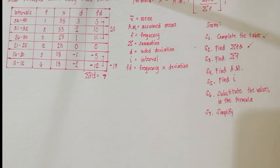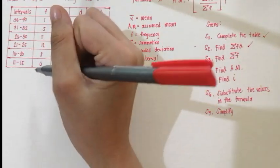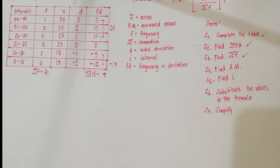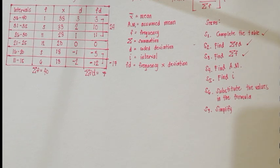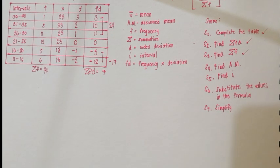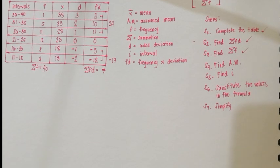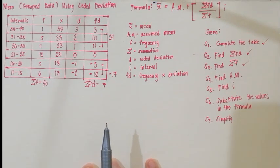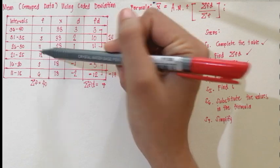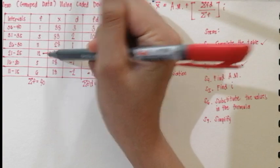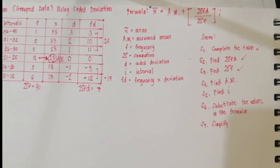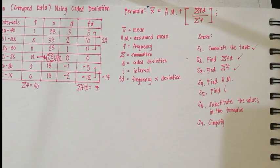Step 3: we need to find summation of F — just add all the frequencies. We already answered this earlier, so the answer is 40. Step 4: find the assumed mean. To find the AM, look at the column of frequencies and find the highest frequency, which is 12. The X or class mark of this frequency is 23, and this will be our assumed mean. To summarize: to find the assumed mean, look at the highest frequency, and whatever the class mark of that frequency is, that is your assumed mean.